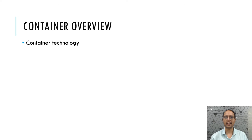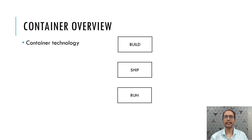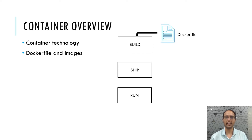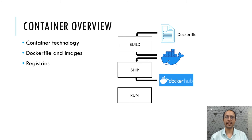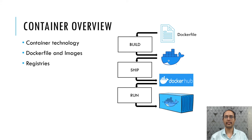Container technology has gained enormous popularity in the past couple of years due to the build-ship-run mechanism it uses for development, shipment, and deployment of applications. Docker images can be used to package applications and their dependencies in a single unit using a Dockerfile. This Dockerfile is used to build a Docker image, which is shipped to Docker registries — public or private repositories where images can be shared. End users can pull images from registries and execute them on their host system. The container is a running instance of the Docker image which executes applications in an isolated environment.